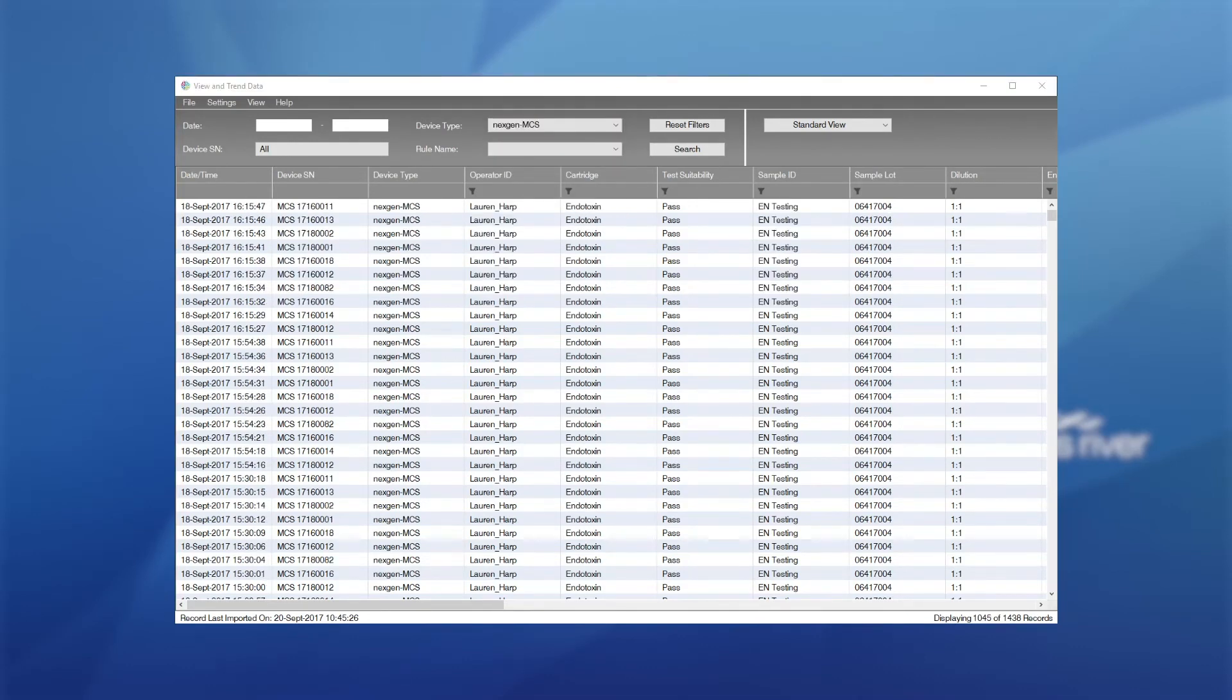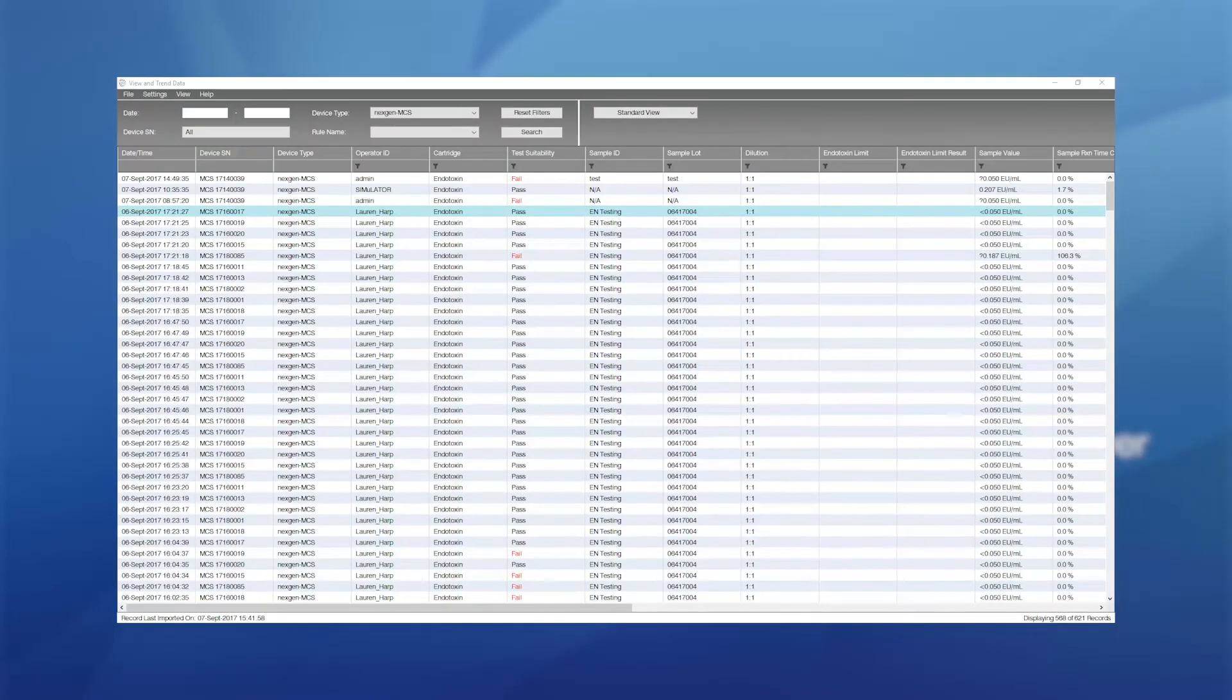You can also use the date filters in the section to filter data down to a specific day. Once data has been filtered, select the assays required and right-click on them in the main view screen. From here, the user can print individual reports, summary reports, and apply electronic signatures.